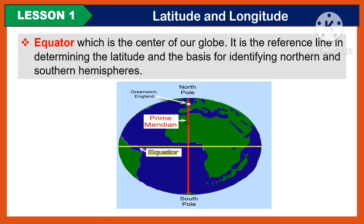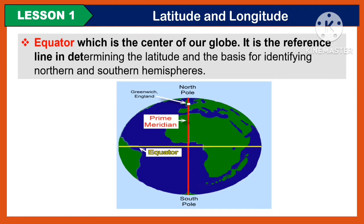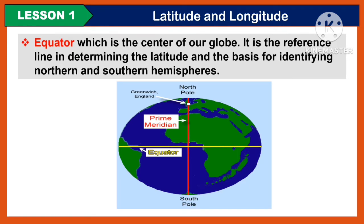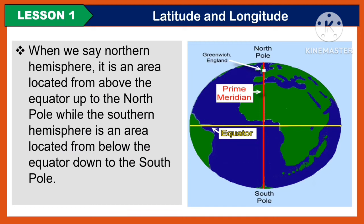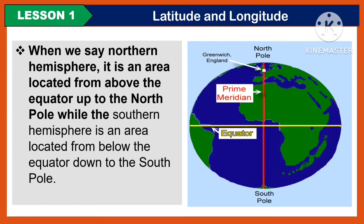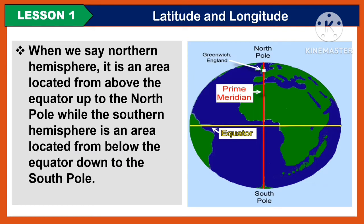The equator is the center of our globe. It is the reference line in determining the latitude and the basis for identifying the northern and the southern hemispheres. The northern hemisphere is the area located above the equator up to the north pole, while the southern hemisphere is the area located below the equator down to the south pole.